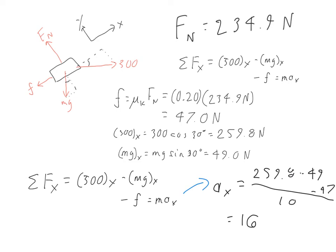We find an acceleration of 16.4 meters per second squared — greater than the acceleration due to gravity. So the block is not only going up the incline, it's really moving fast. That's the procedure: identify all forces, choose a useful tilted coordinate system, split forces into components, apply sum of forces in x and y, and solve for what you need.